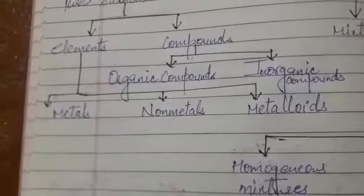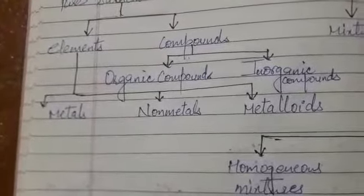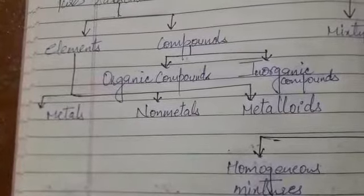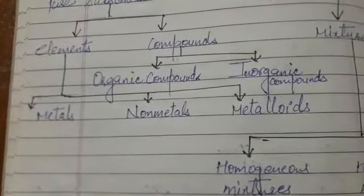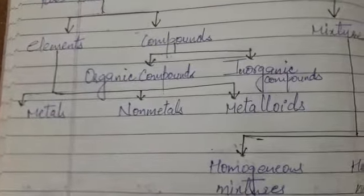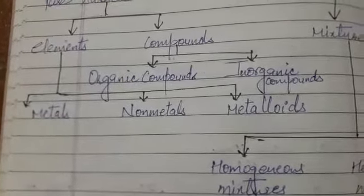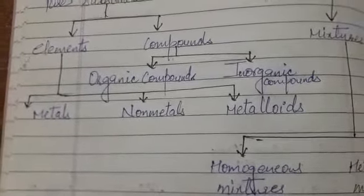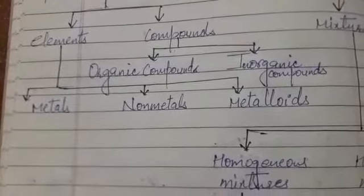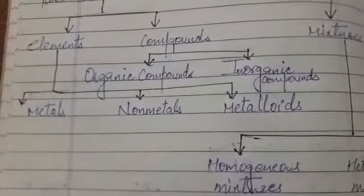And metalloids: the elements which possess some properties of metals and some properties of non-metals are called metalloids.